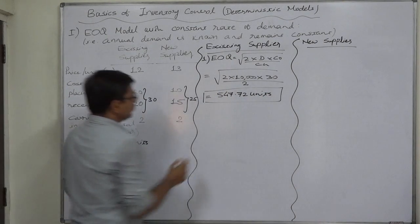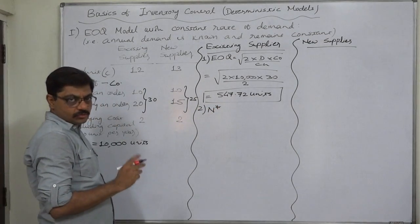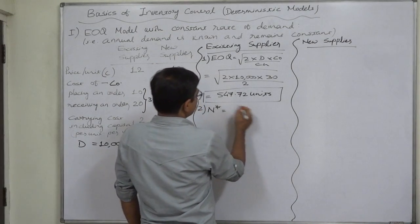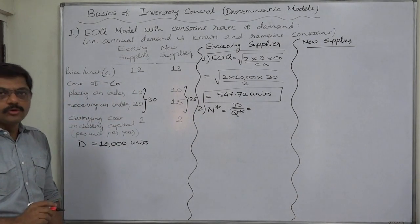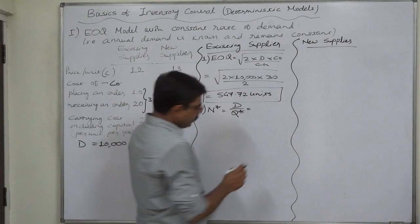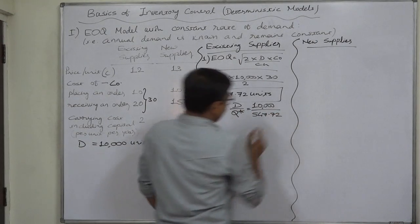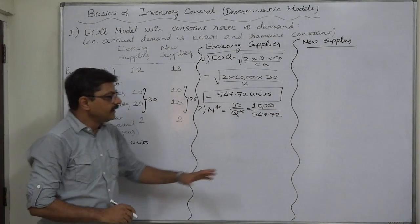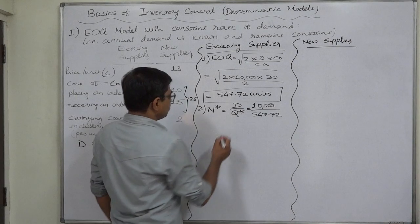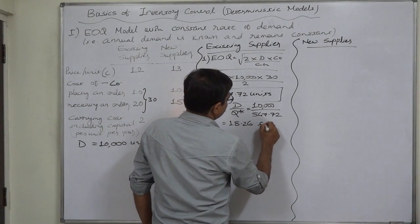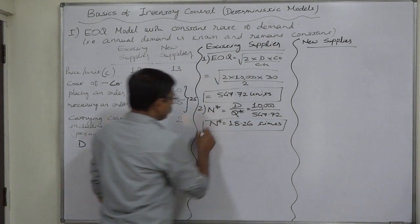At present, the EOQ is this much. Number 2, N star, that is number of orders or optimal number of orders per annum. That is nothing but D divided by Q star, and we believe that our ordering quantity is exactly equal to EOQ, so Q star is exactly equal to EOQ: 10,000 divided by 547.72. It comes to 18.26 times. That means during the year, the manufacturer has to place order approximately 18 times.